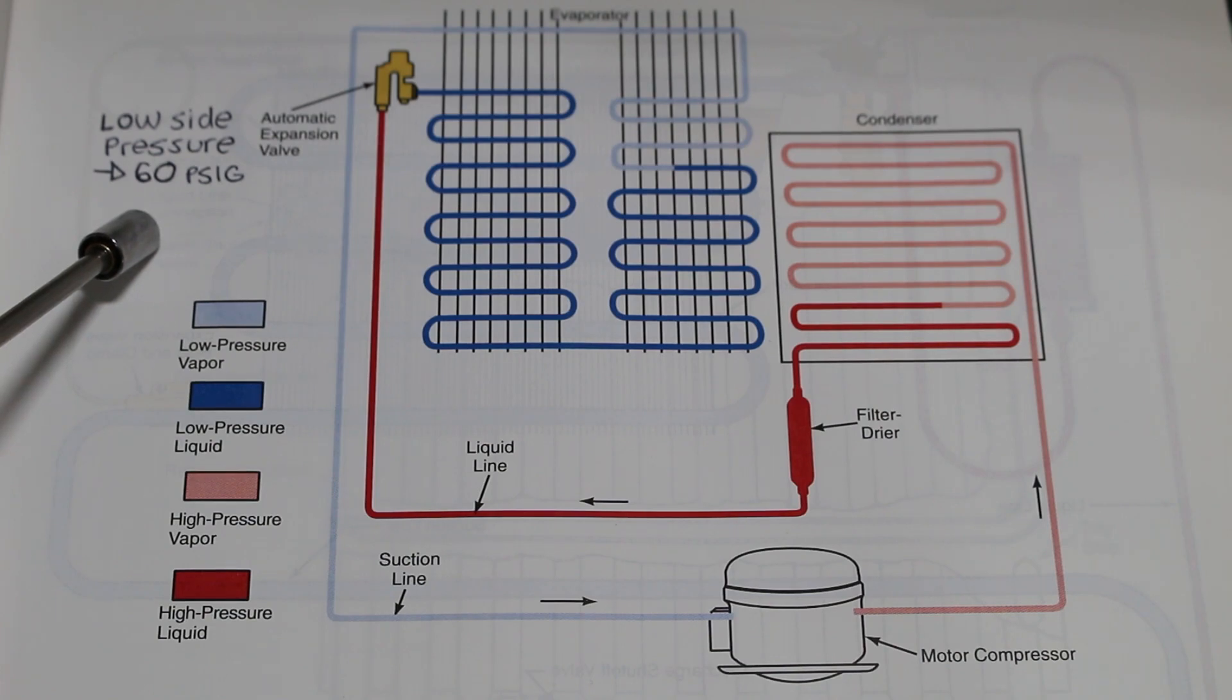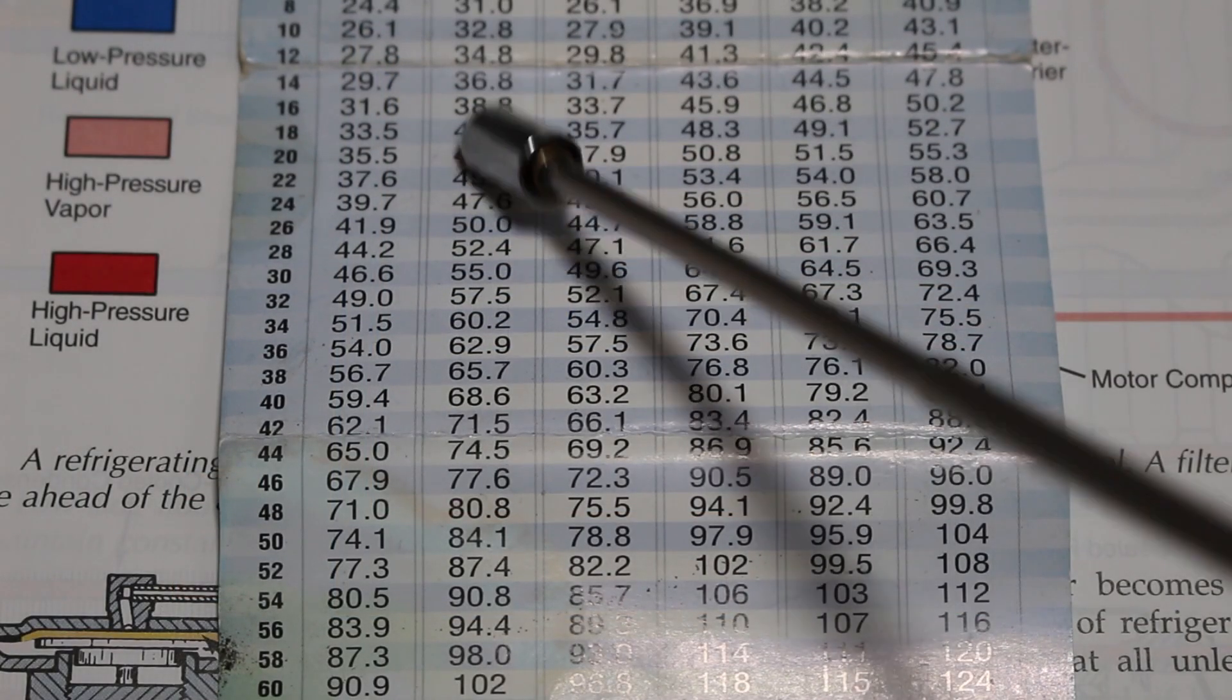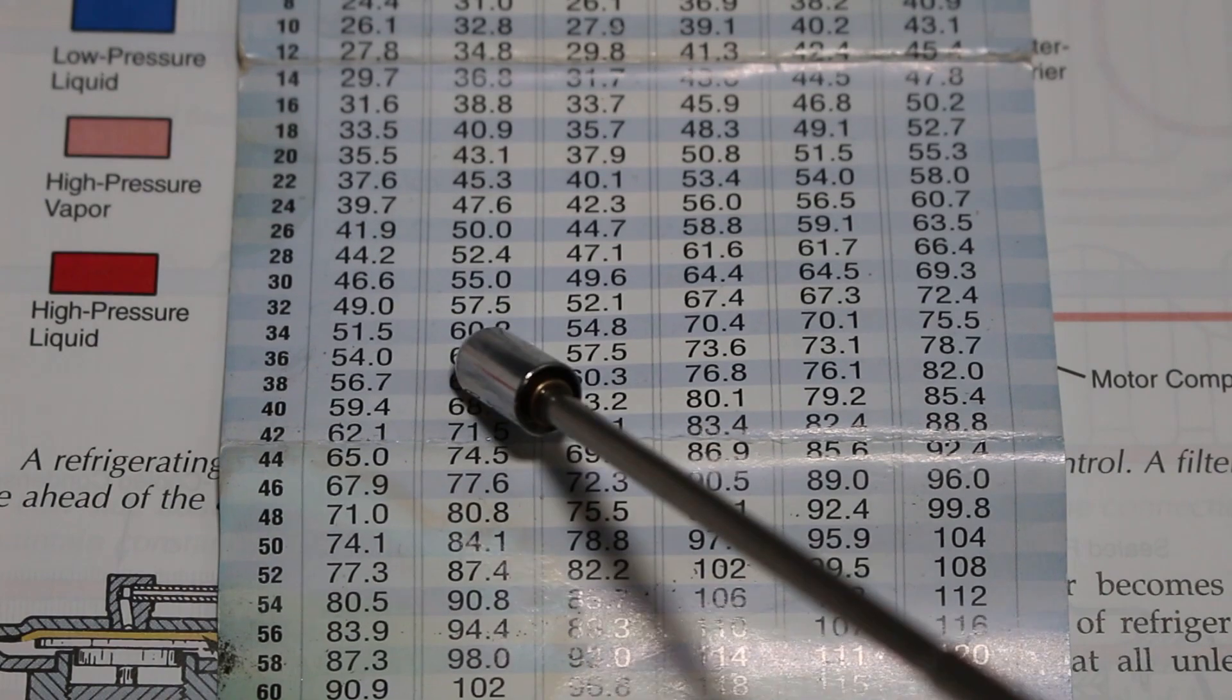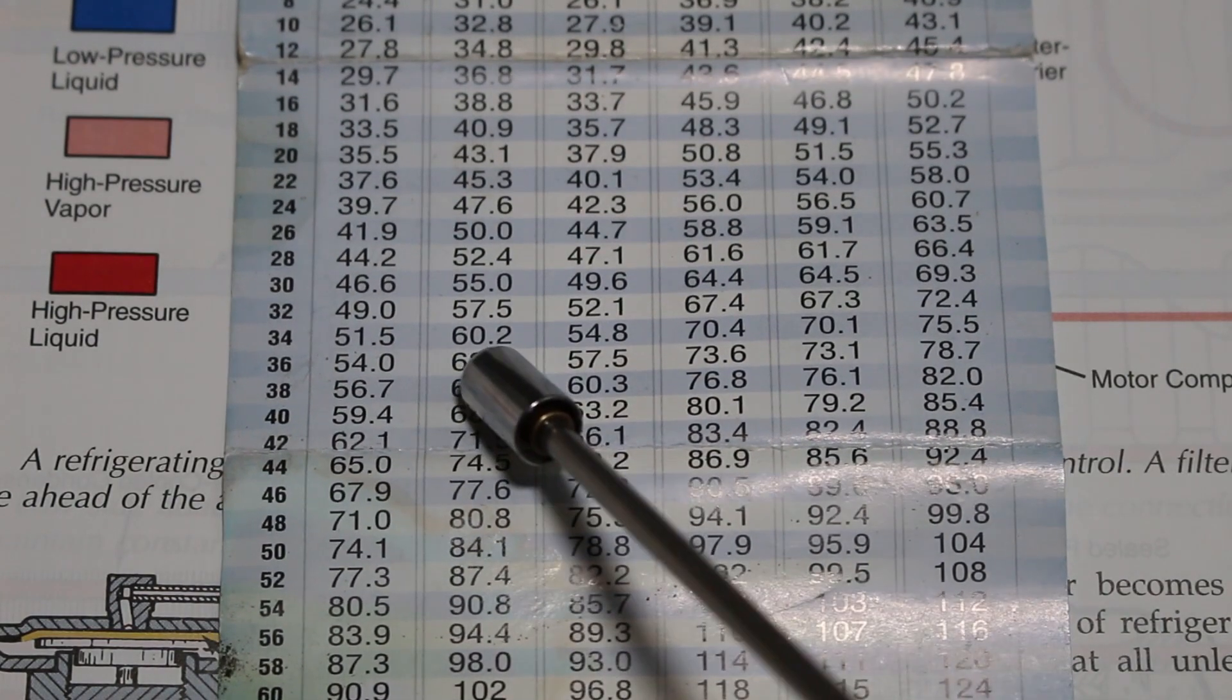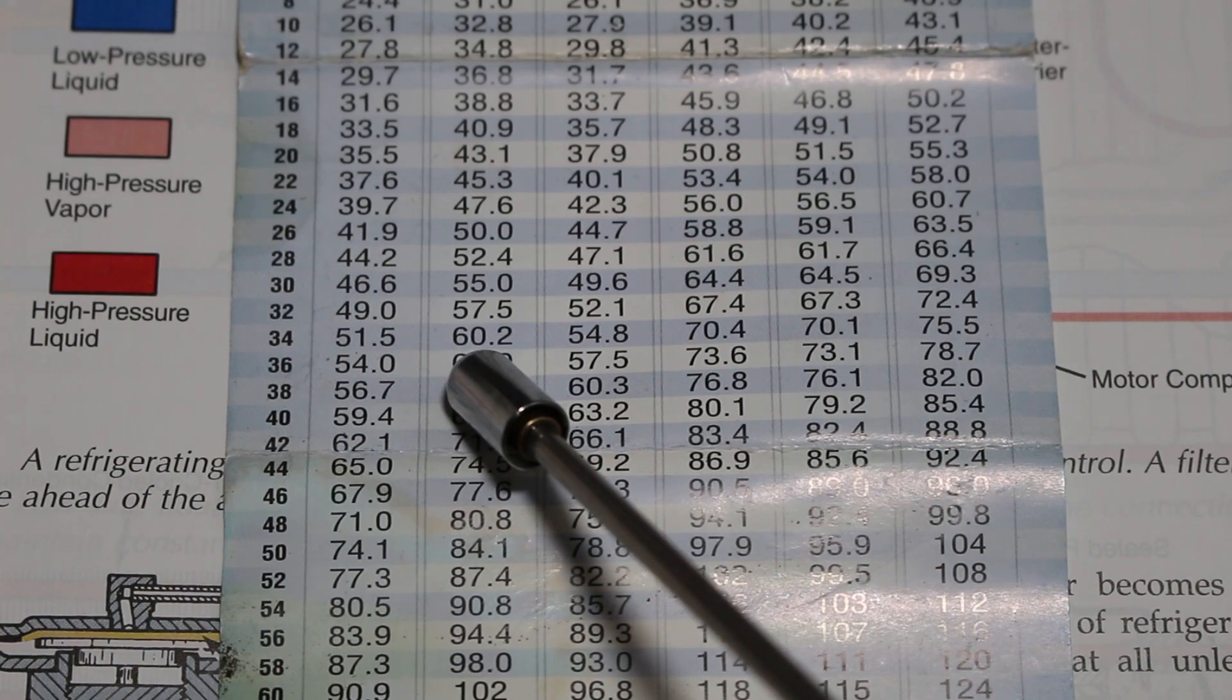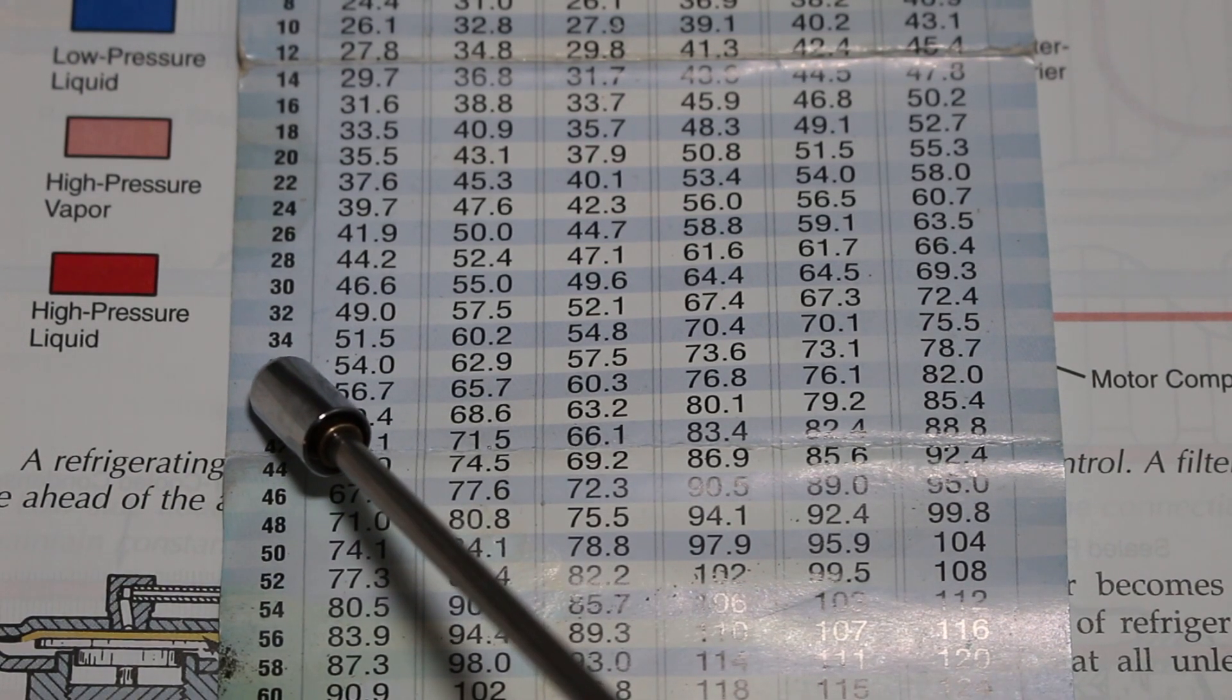Next, we're going to take our PT chart and match 60 PSIG with the corresponding temperature for R22. R22 is represented in the second column here. This is your pressure, and this is your temperature. So for 60 PSIG, our saturation temperature is 34 degrees Fahrenheit.